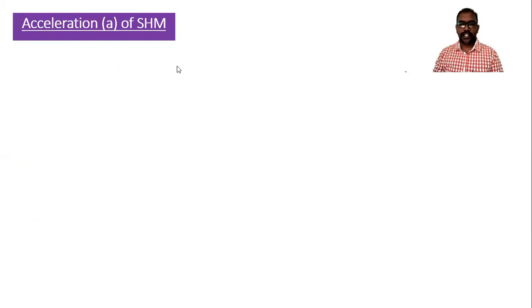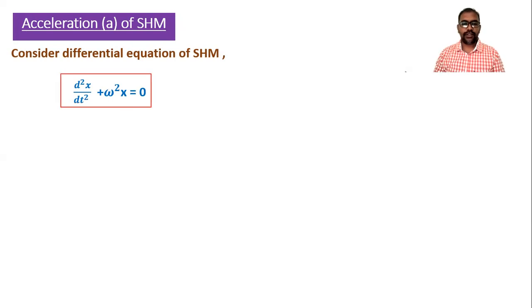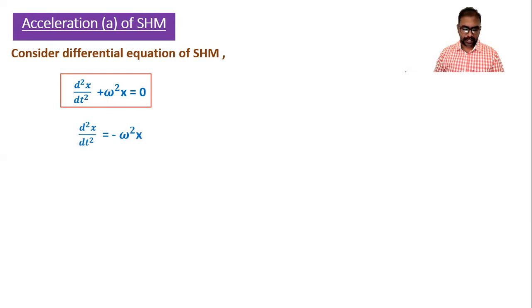We start with the expression for acceleration. We have to write the differential equation of linear SHM first. The differential equation of linear SHM is given by this formula. This is the differential equation of linear SHM which we already obtained in the previous article. This equation can be written as d²x/dt² = −ω²x.